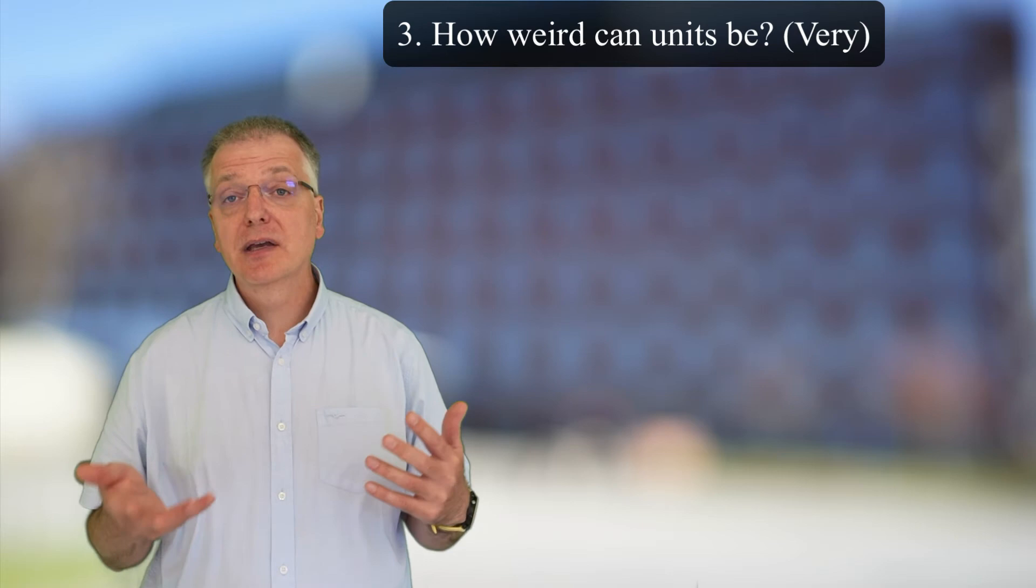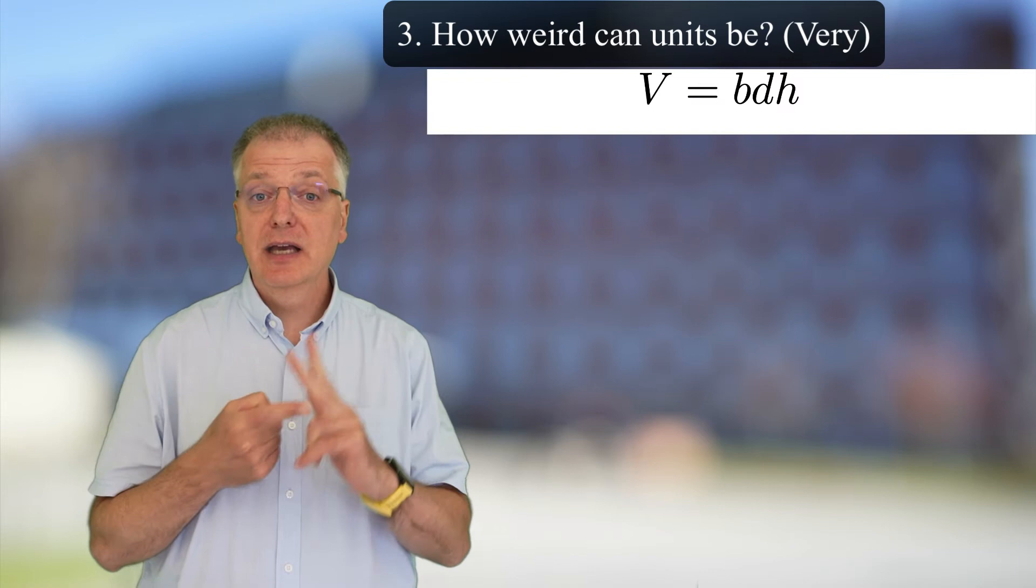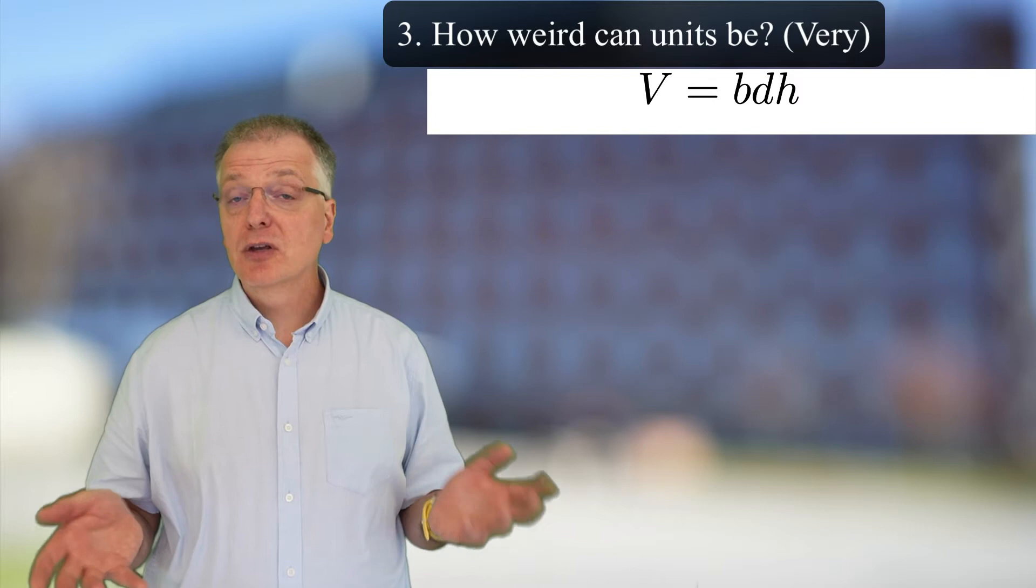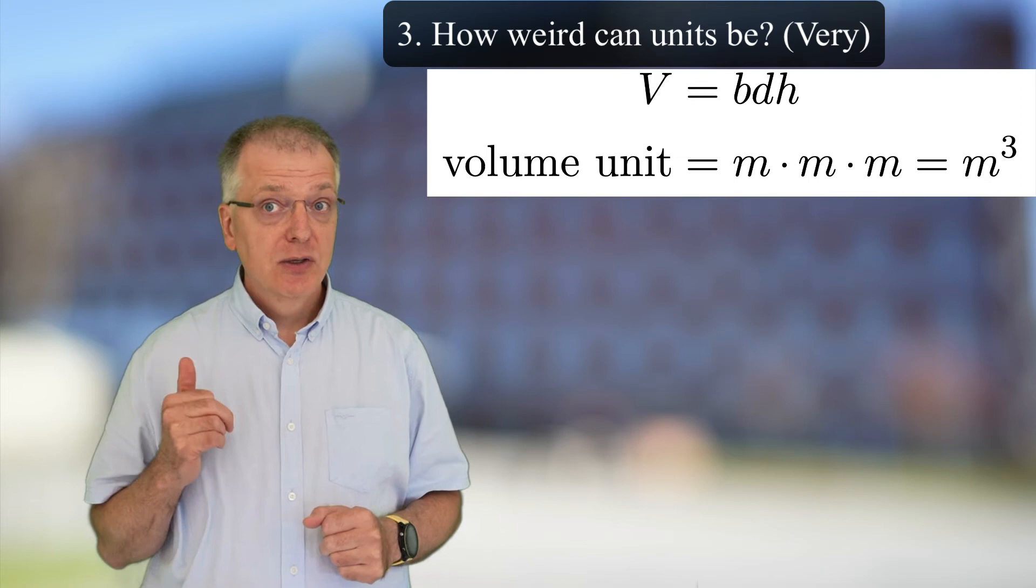You know by heart that volume can be measured in cubic meters, but why is that? Well, if you have a box with breadth B, depth D, and height H, you know that you multiply these three numbers together to get the volume of the box. V equals B times D times H. But if you look at the units, you get meter times meter times meter, which gives you cubic meter.